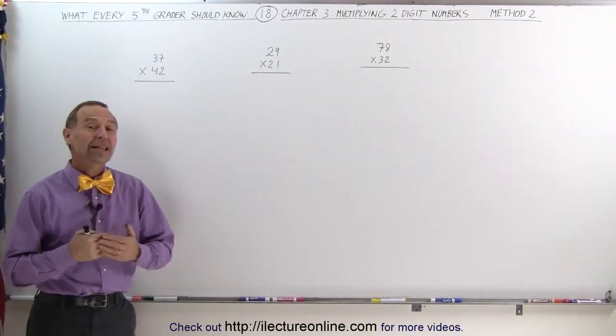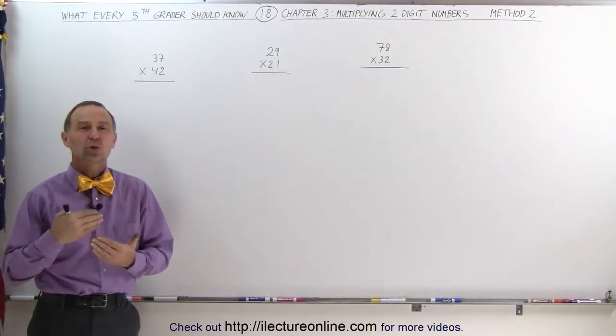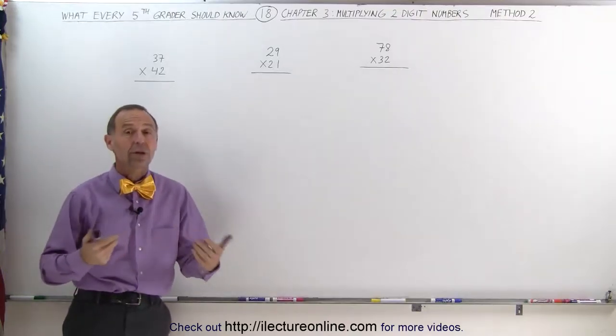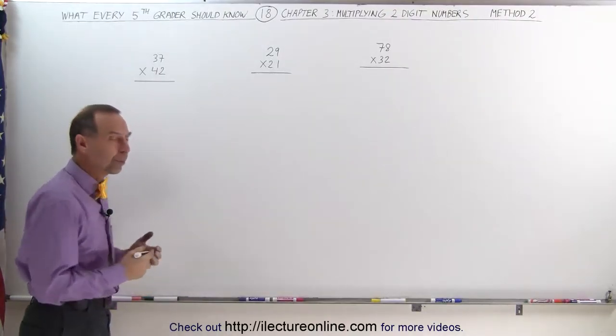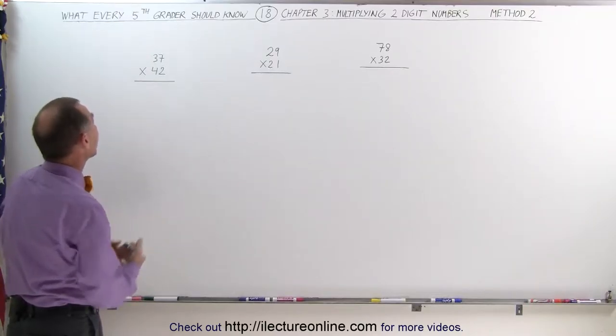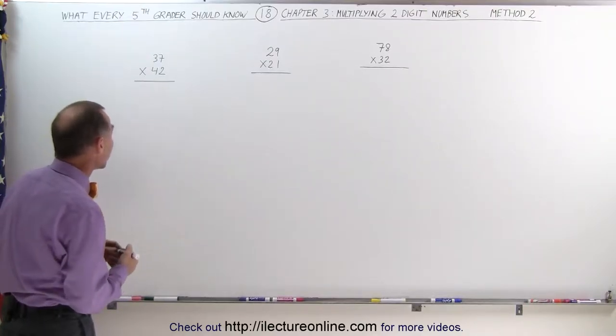Welcome to Lecture Online. Here we're going to take another look on how to multiply two two-digit numbers together, so we call that method 2. Before we show you how to do that, let's go ahead and work it out the old-fashioned way, simply through the longhand process.